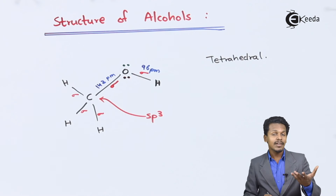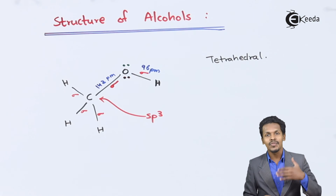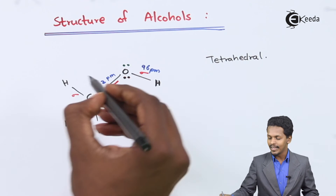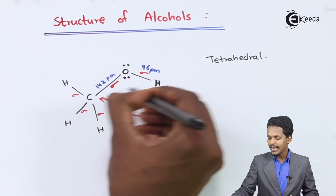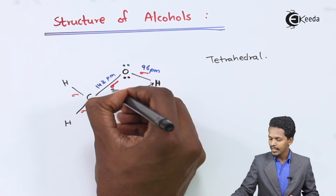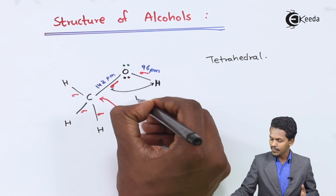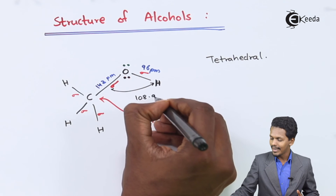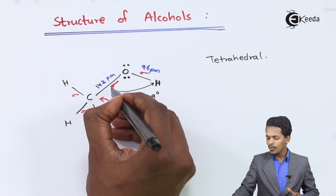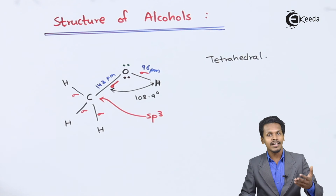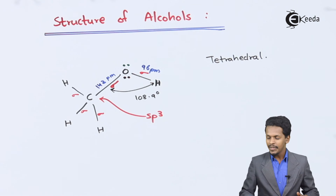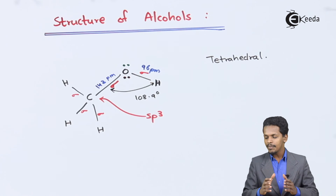Being a tetrahedral molecule, the bond angle should be 109.5 degrees. However, it has been found that the bond angle is 108.9 degrees, which is approximately like that of tetrahedral geometry at 109.5 degrees.